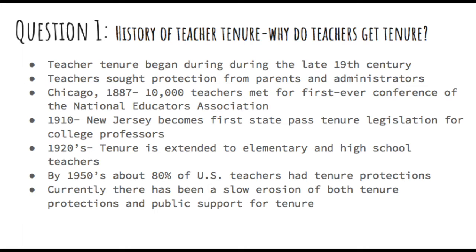New Jersey became the first state to pass tenure legislation when in 1910 it granted fair dismissal rights to college professors. During the suffrage movement of the 1920s, when female teachers could be fired for getting married, getting pregnant, or even wearing pants, such rights were extended to elementary and high school teachers as well. By the 1950s, about 80 percent of U.S. teachers had tenure protections. Since then, there has been a slow erosion of both tenure protections and public support for teacher tenure.